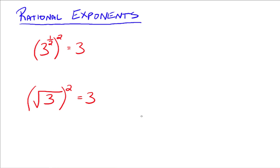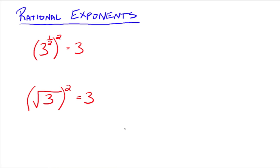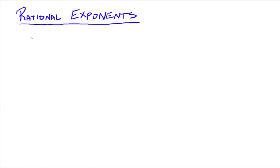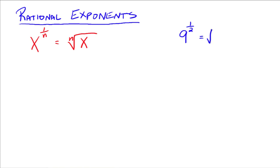That leads us to rational exponents, where we have exponents that don't just mean the number of times you multiply the base together. We've got fractional exponents now, and fractional exponents equate to roots — to radicals. The notation is: x to the 1 over n means the nth root of x. For example, 9 to the 1 half power means the square root of 9, which is 3.